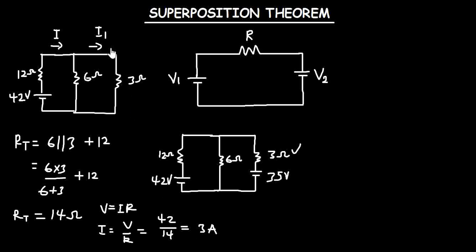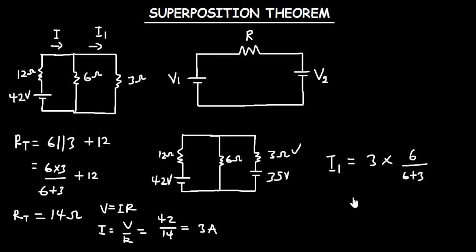Now that we know the total current, we would like to find I1, which is the current flowing through the 3 ohms resistor. I'm going to apply the current division rule. So I1 equals the total current of 3 amperes times the 6 ohms resistor, divided by the total resistance of 6 plus 3 ohms. That gives us I1 = (3×6)/9 = 2 amperes. So when the 42 volt source is acting alone, the current flowing through the 3 ohms resistor is 2 amperes.